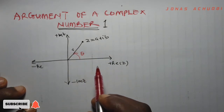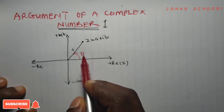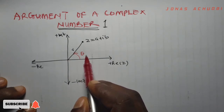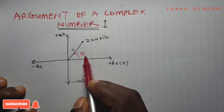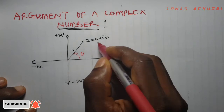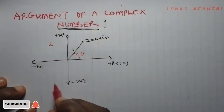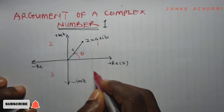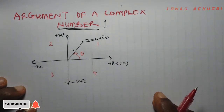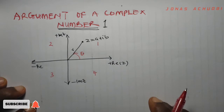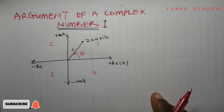In today's lesson we want to illustrate how this angle theta, this argument, can be obtained. What this argument is depends on which quadrant the complex number lies in. This here is the first quadrant, this part is the second quadrant, here is the third quadrant, and this part here is the fourth quadrant. We shall now investigate what happens in each quadrant.